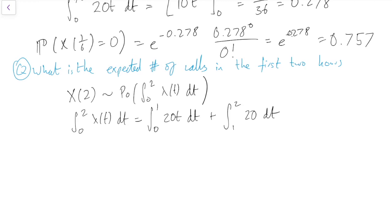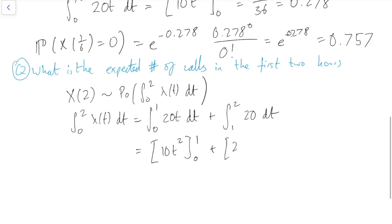So our integral is 20t between 0 and 1 and just 20 between 1 and 2. Again, we need to do that integration. 20t, we said before, became 10t squared between 0 and 1. 20 just becomes 20t between 1 and 2. So the 10t squared... 1 squared is 1, so that gives us 10. This gives us 20 times 2 is 40. 20 times 1 is 20. That's 10 plus 20 equals 30.